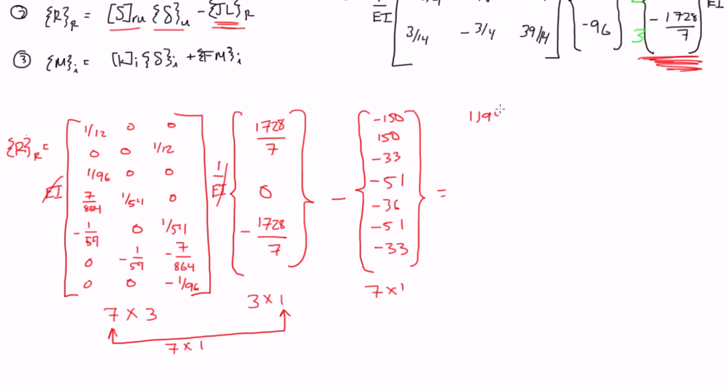And if we do our matrix algebra right here, we'll get 1194 over 7, negative 1194 over 7, 249 over 7, 53, 188 over 7, 53, and then finally 249 over 7. These numbers correspond to the restrained degrees of freedom. So we had 1, 2, and 3 were unrestrained. So this is going to be 4, 5, 6, 7, 8, 9, and 10.